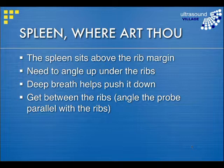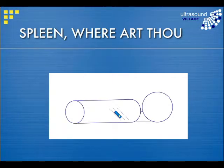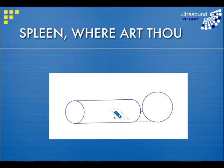People beginning their scanning often have difficulty imaging the spleen. Don't forget it sits above the rib margin, so if you're trying to see it from below the ribs, you'll need to angle your transducer beam up under the ribs. It often helps to get patients to take a deep inspiration to depress the diaphragm and push the spleen down as much as possible. Alternatively, move the probe cranially up over the ribs, tilting the probe maybe 20–30 degrees so it runs parallel with the ribs to help reduce rib shadowing.